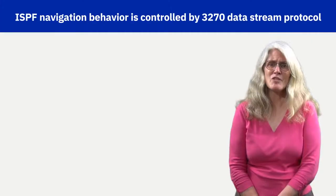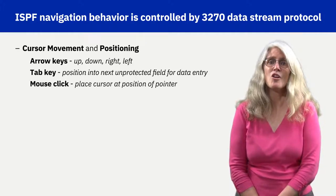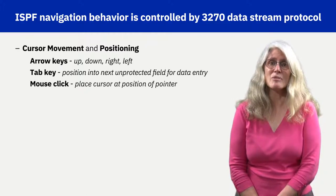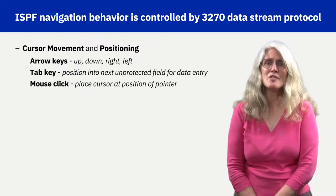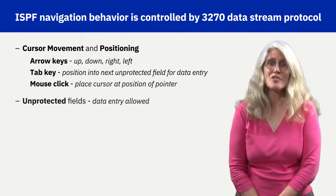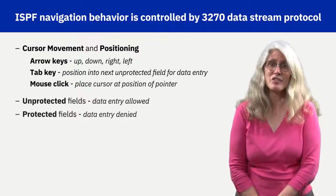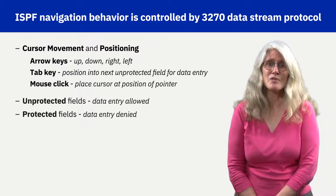The ISPF display cursor can reference any row and column using arrow keys, the tab key, or mouse clicks. Once the cursor is in the desired row and column, you can begin entering text or pressing the Enter key. Some rows and columns are tagged as 3270 unprotected areas enabling text to be entered, while others are tagged as 3270 protected areas disabling text entry. An attempt to enter text in a protected area might lock the keyboard. The reset function exists to unlock the keyboard entry.